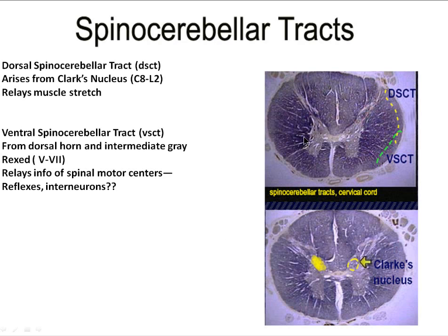Here are actual cross sections of the spinal cord showing where the spinal cerebellar tracts lie. This is the lateral funiculus. There's the dorsal spinal cerebellar tract and the ventral spinal cerebellar tract.